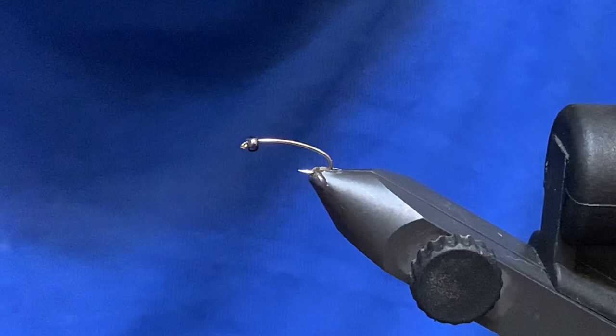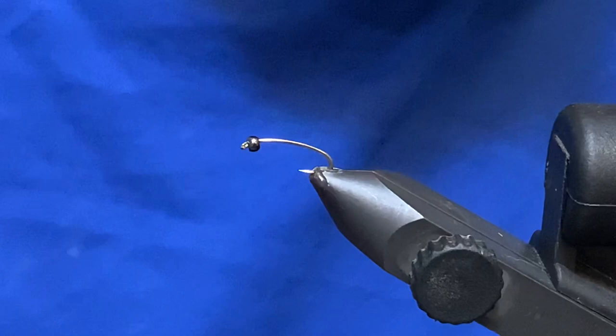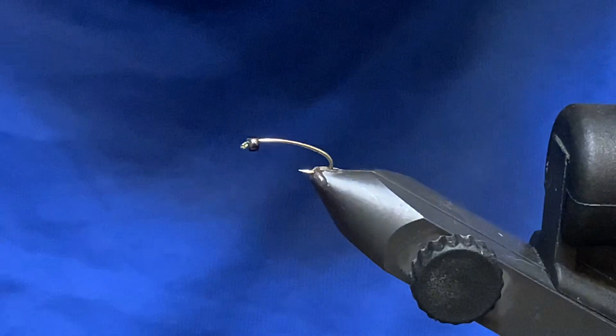So this first one is called the Double Duty and it serves as a chronomid pupa and larva pattern. It's tied with some new stuff from Canadian Llama, these Paragone buzzer quills.